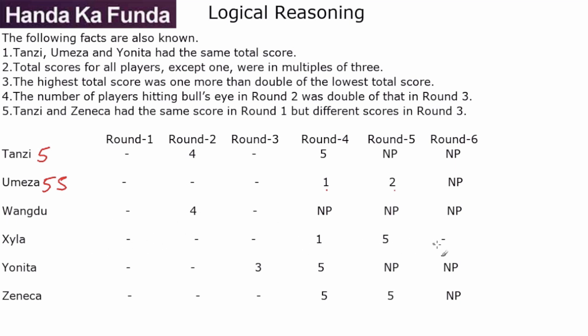Xyla, on the other hand, has scored in all three rounds, which actually means that we know Xyla's score for all three rounds must be 5, 5, 5. Only then she can actually go ahead. Yonita has participated in round 4. That means she must have one 5 also. And Zeneca has two bull's eyes in round 4 and round 5. That means she participated in round 4 and round 5. That means Zeneca also must have two fives before.